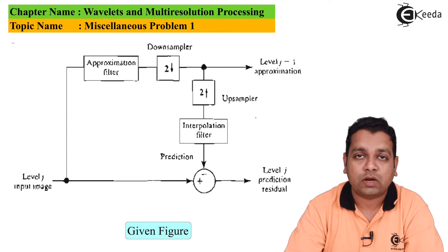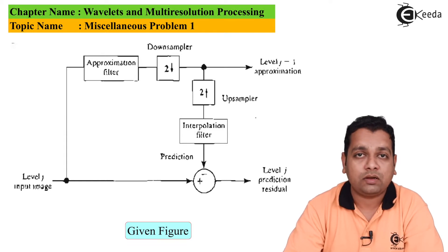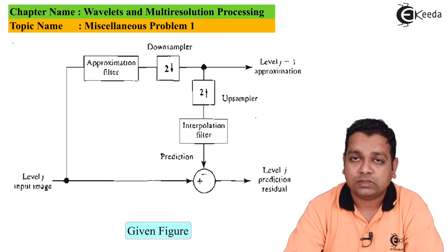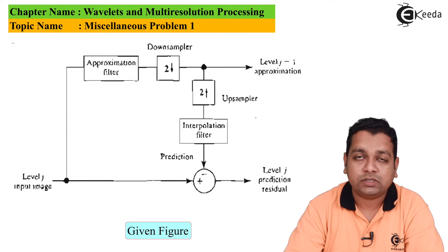The approximation filter is along with the down sampler with factor of 2. We have on this branch the up sampler, the down sampling and up sampling where we have decimation and interpolation. Also the change in the sampling rate by the use of zeros in case of interpolation to increase the length. The level J prediction residual can be obtained here, and the level J minus 1 approximation can be obtained at this particular point.